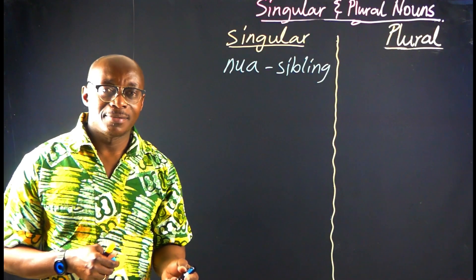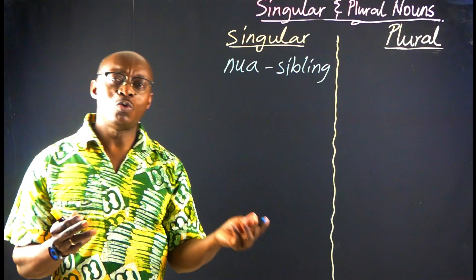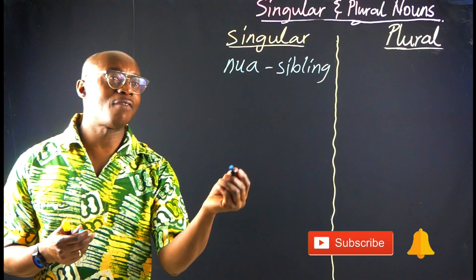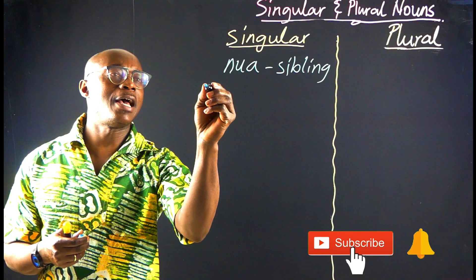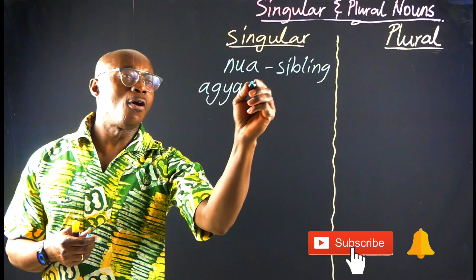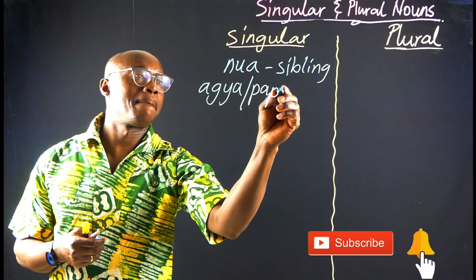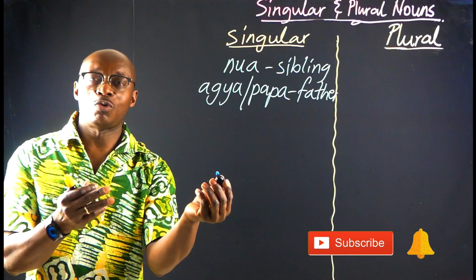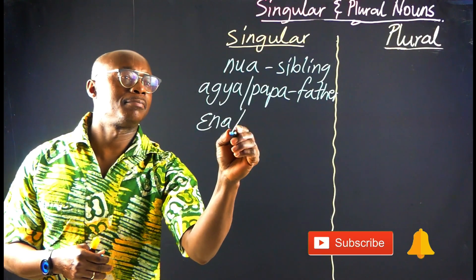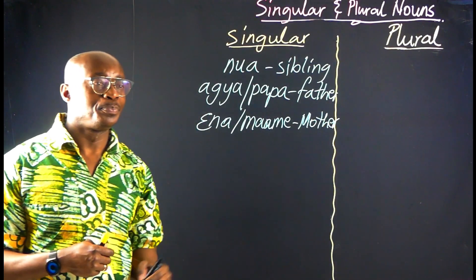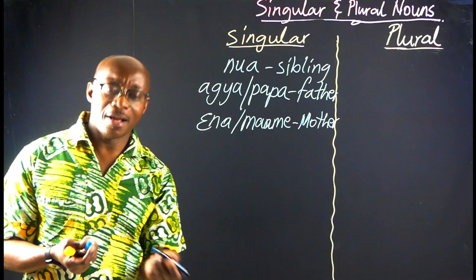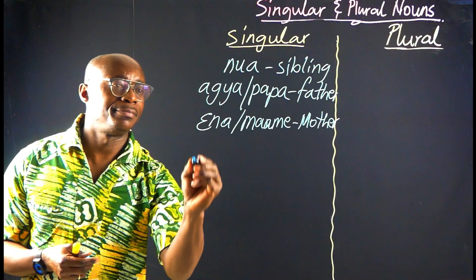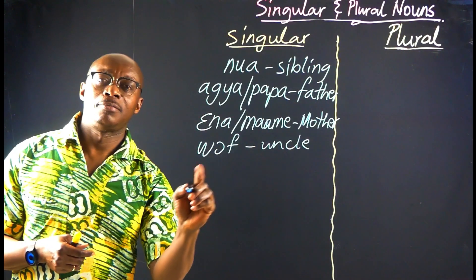The next will be parents. For the parents, we will have Father — and that is Eja, or Papa. Both words mean Father. And then we come to Mother. After Mother, who comes next? Uncle. And then Auntie.